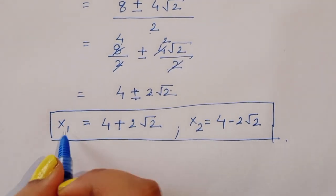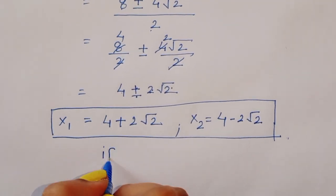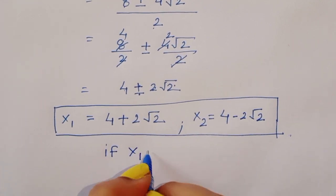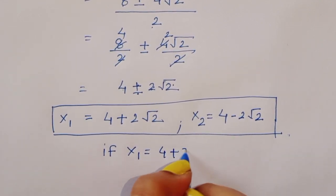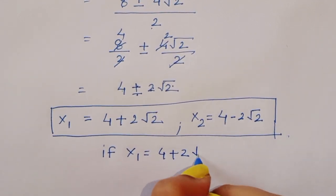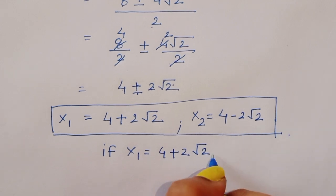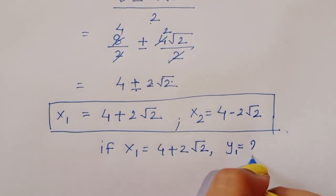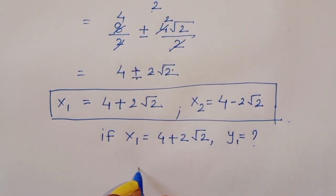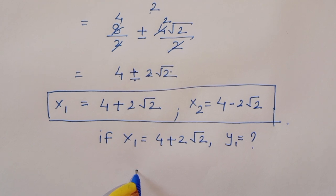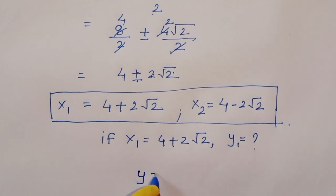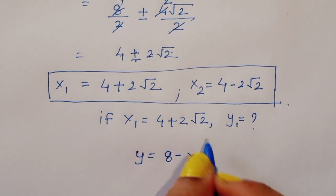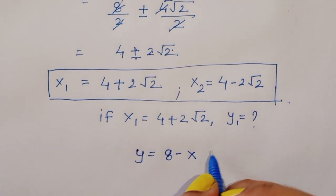If x1 is equal to 4 plus 2 root 2, then what is the value of y1? Using equation 3: y is equal to 8 minus x.